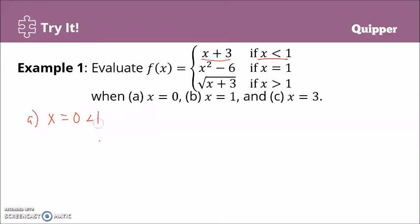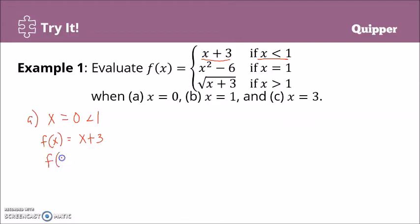Because 0 is less than 1, we use the equation f(x) = x + 3. So we solve for f(0). That is 0 plus 3, and that is equal to 3.